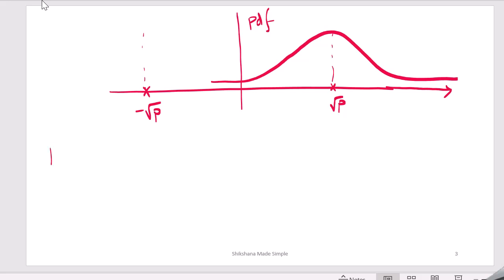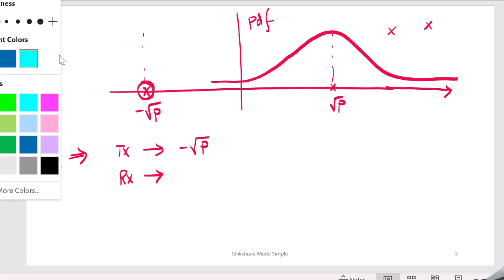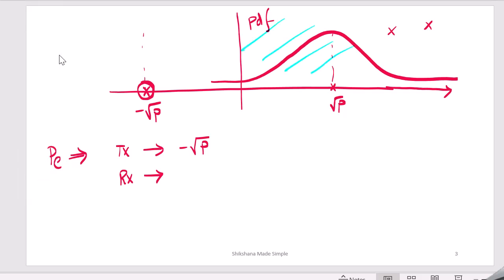So probability of error, when does it occur? Let's say you transmitted minus P, you transmitted this particular point, but now at the reception you received the sample somewhere at this point or this point or anything which is actually present in this region.